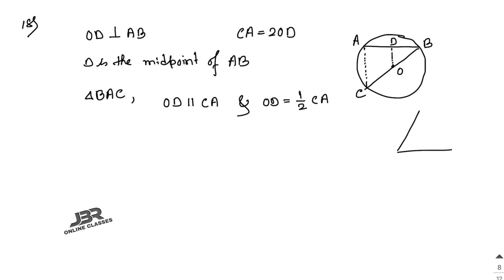In a triangle, if you join the midpoints of two sides, the connecting line is parallel to the third side and equal to half of it. So here, since D and O are midpoints of AB and BC respectively, OD is parallel to CA and OD equals half CA — therefore 2·OD equals CA. Proved.